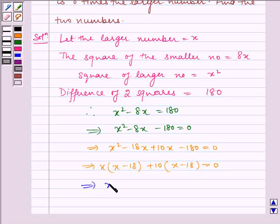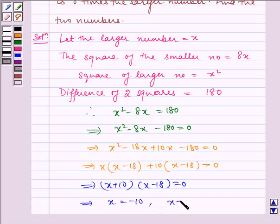Therefore this implies x plus 10 into x minus 18 is equal to 0, which implies x is equal to minus 10 and x is equal to 18.